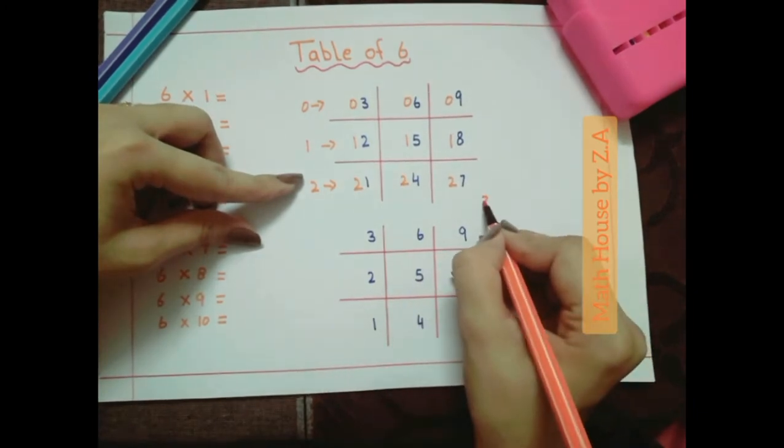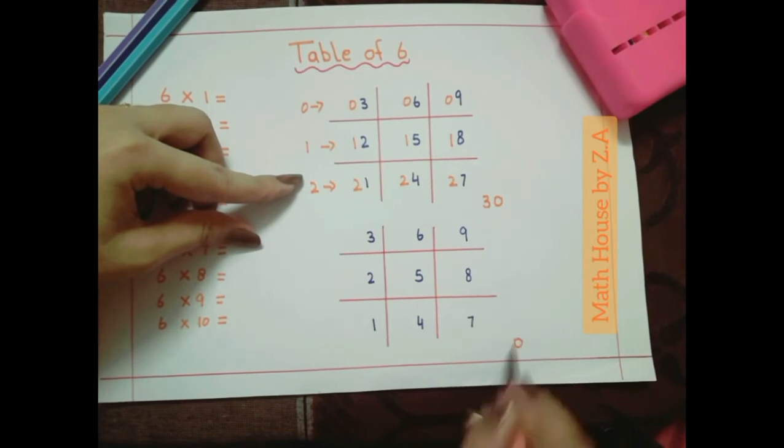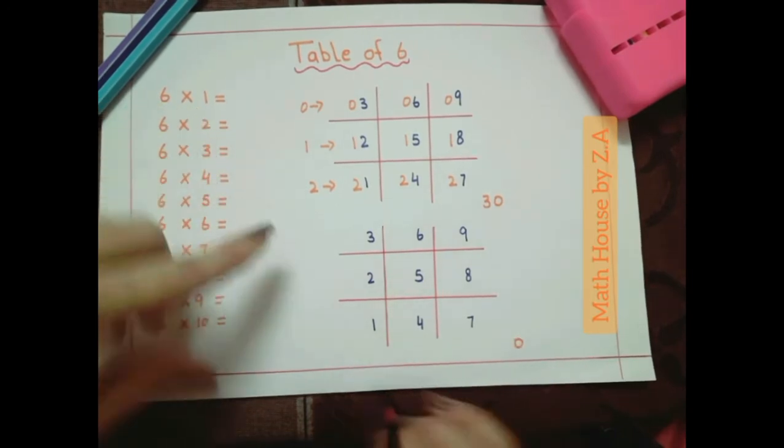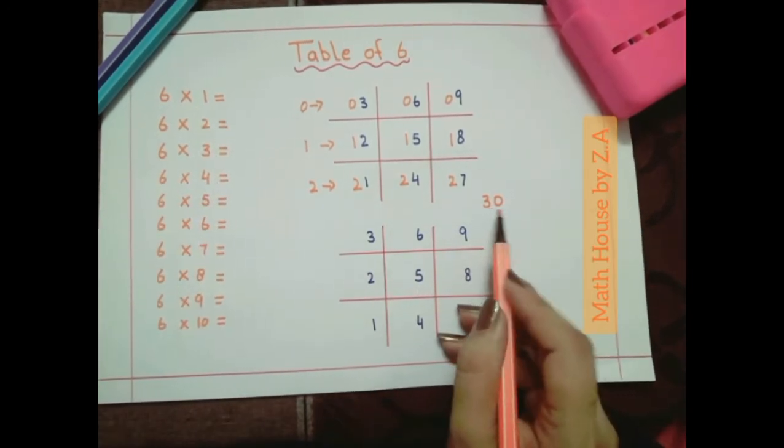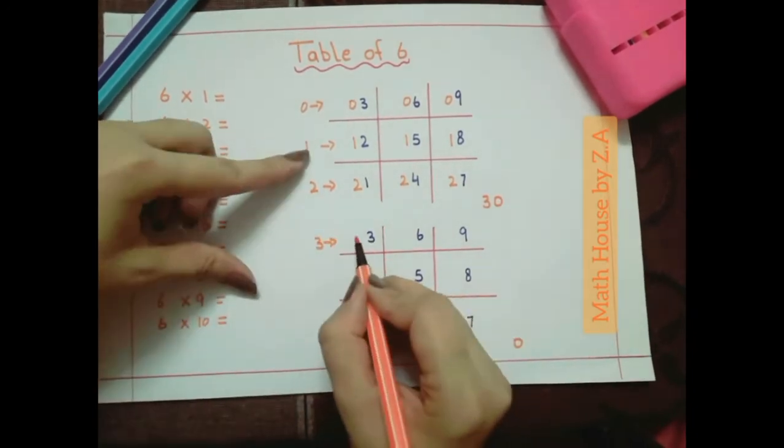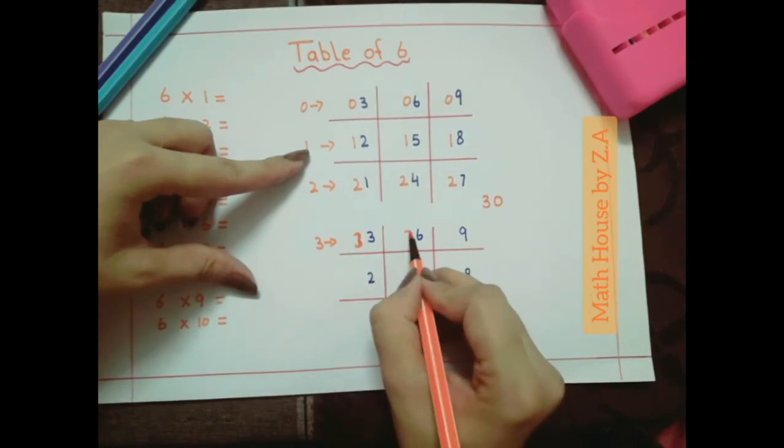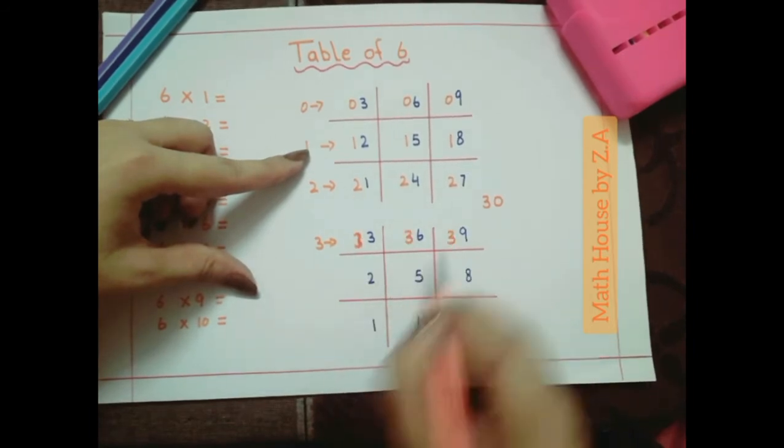After that we must write 0 here and with 0 add the 3. Now it's time to add the numbers in second grid. So we will add 3 in the first row of second grid with each number. So 3 with 3, 3 and 3 with 9.